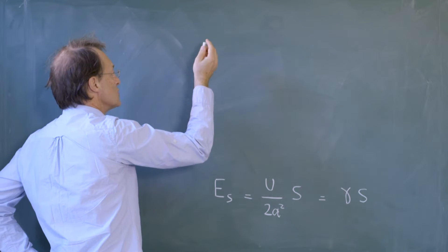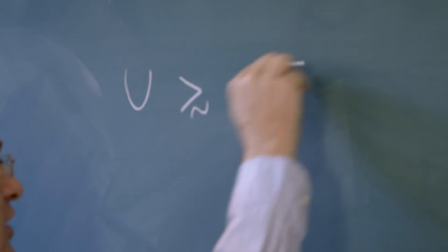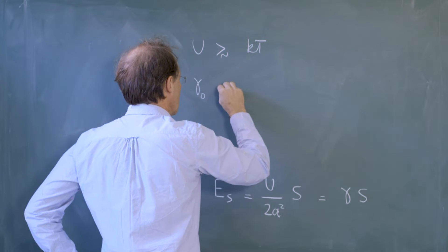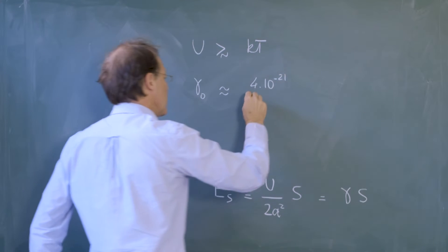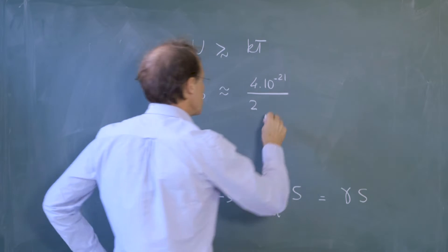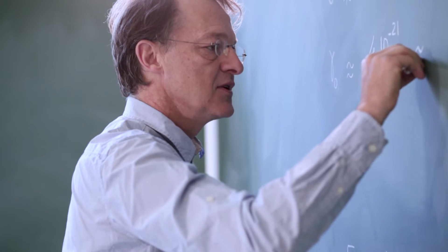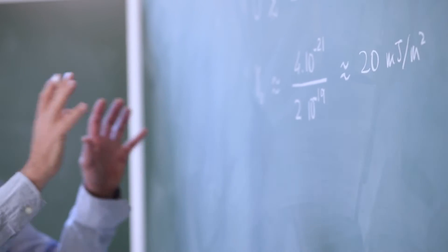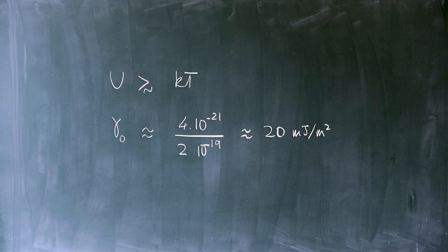For Van der Waals liquid, such as a light oil, U is slightly larger than the thermal energy KT, so that we expect that the surface tension of oil is on the order of KT, which is 4 times 10 to the minus 21, divided by this factor 2 we have here, times the typical size of a molecule, which is a few angstroms. We get something like that for the square. And so this gives 20 millijoules per square meter. And this is what we expect from this very simple argument. And this is indeed the typical surface energy of oil.